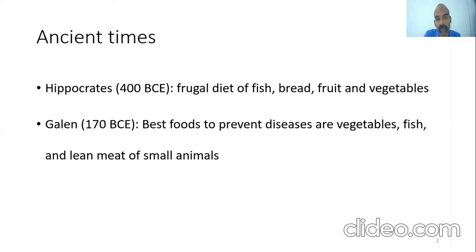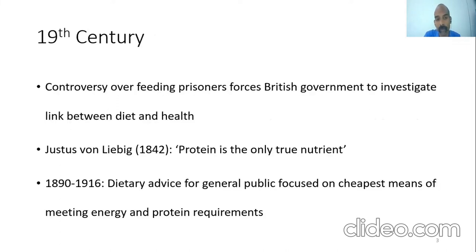In ancient times, Hippocrates around 400 BCE first stated that a person must consume a frugal diet of fish, bread, fruits, and vegetables. By the time Galen came on the scene around 170 CE, he said that the best foods to prevent disease are vegetables, fish, and lean meat of small animals. This largely remained unchanged until the 19th century.